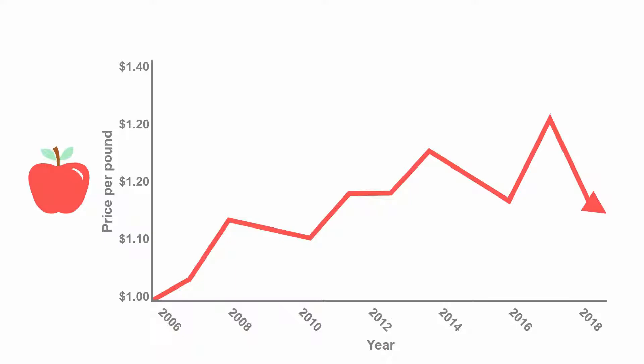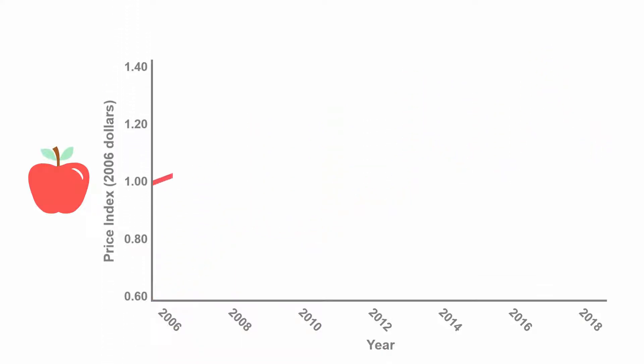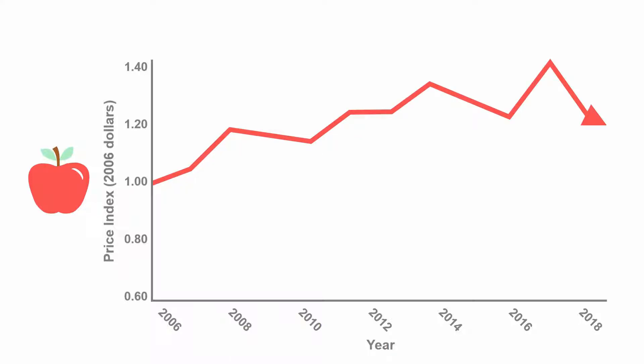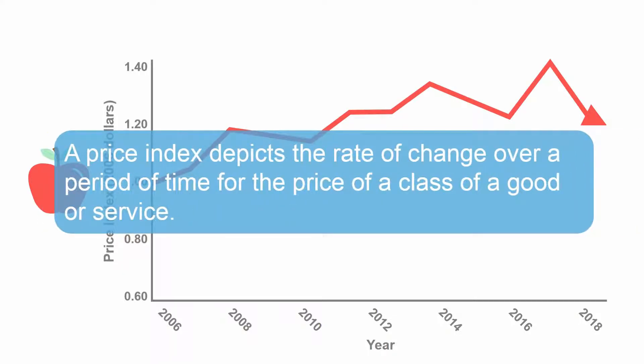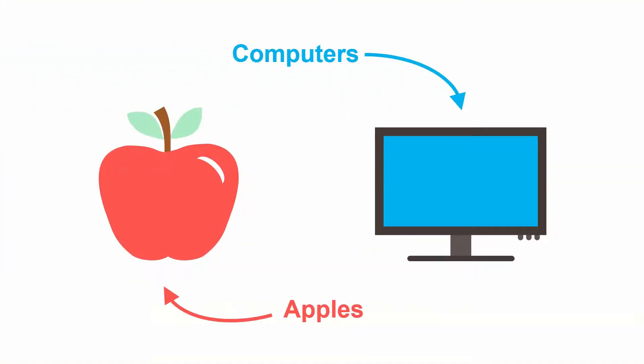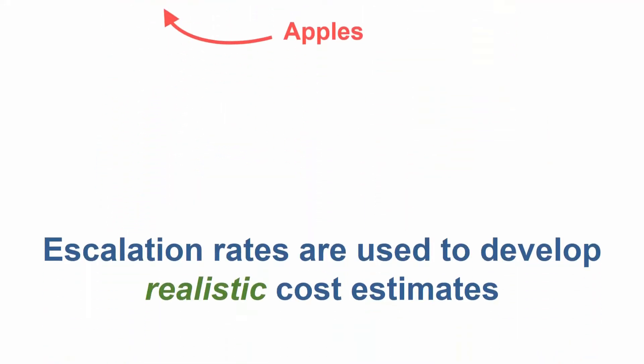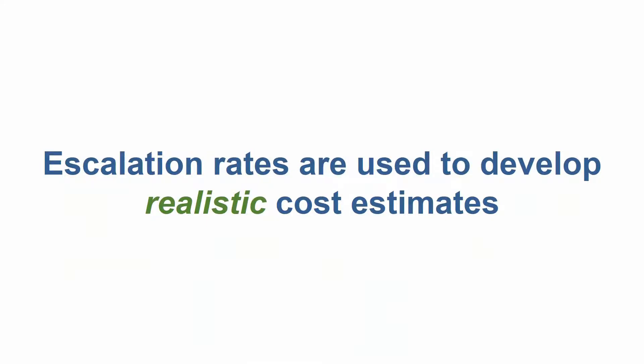Although tracking the observable price changes of apples over time is useful, an analyst may prefer to convert observable price changes into a price index. A price index depicts the rate of change over a period of time for the price of a class of good or service. From apples to computers, everything has a unique escalation rate. This also includes aspects such as the material and labor used to produce them. In the Department of Defense, escalation rates are used to develop a realistic cost estimate.